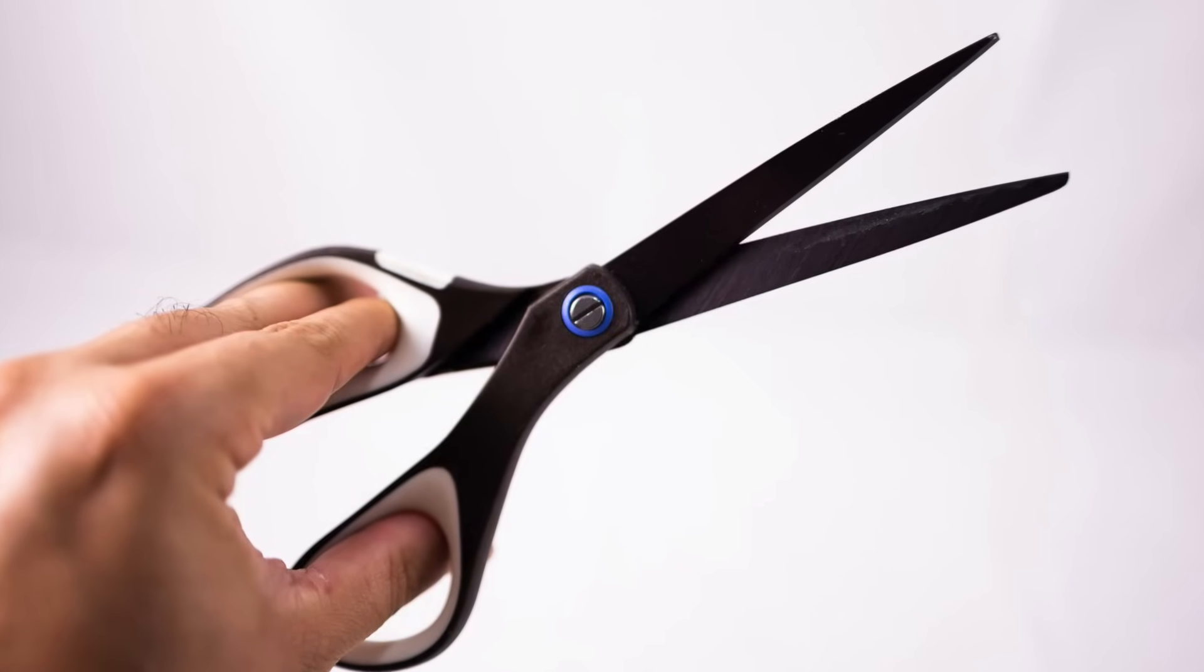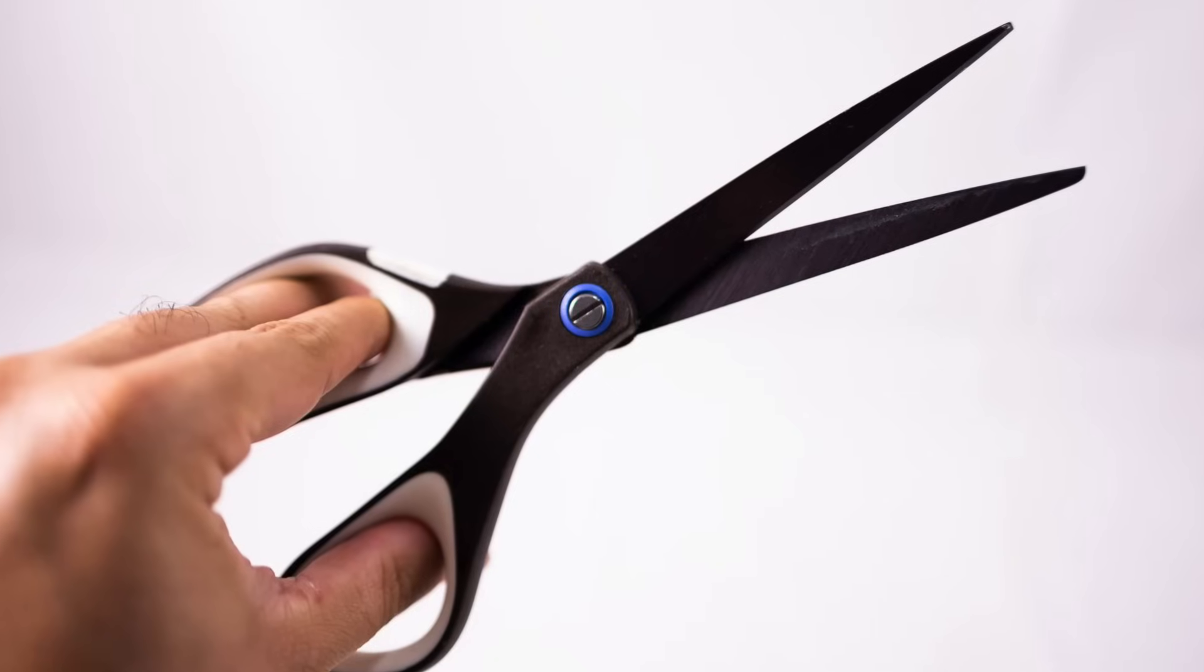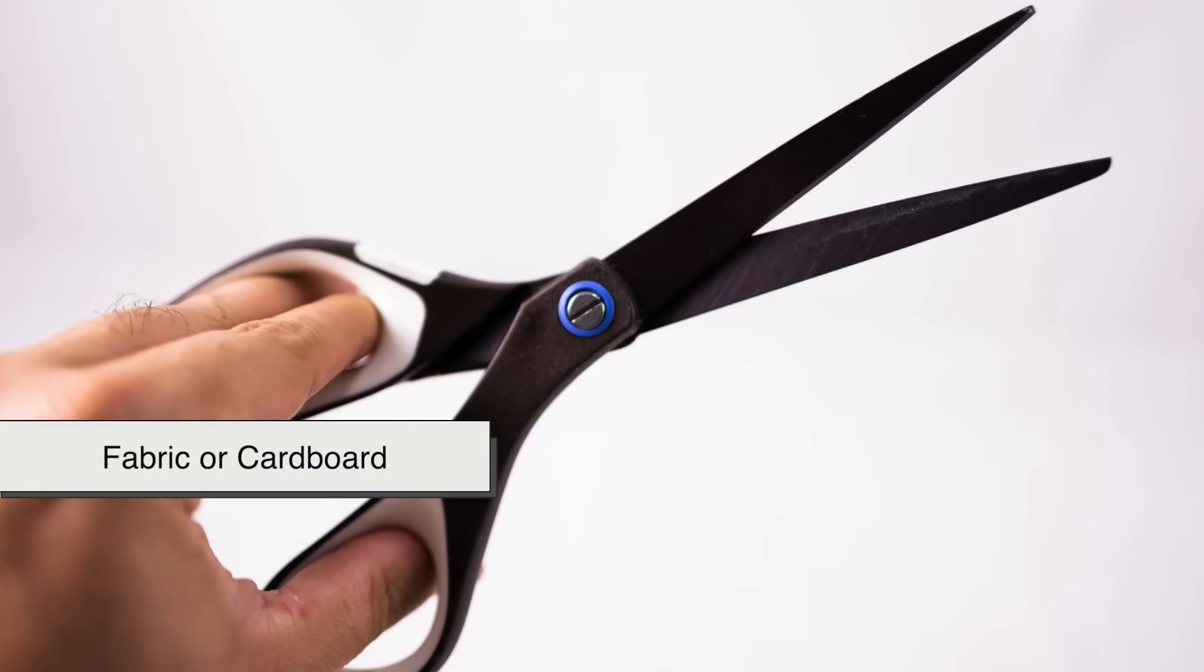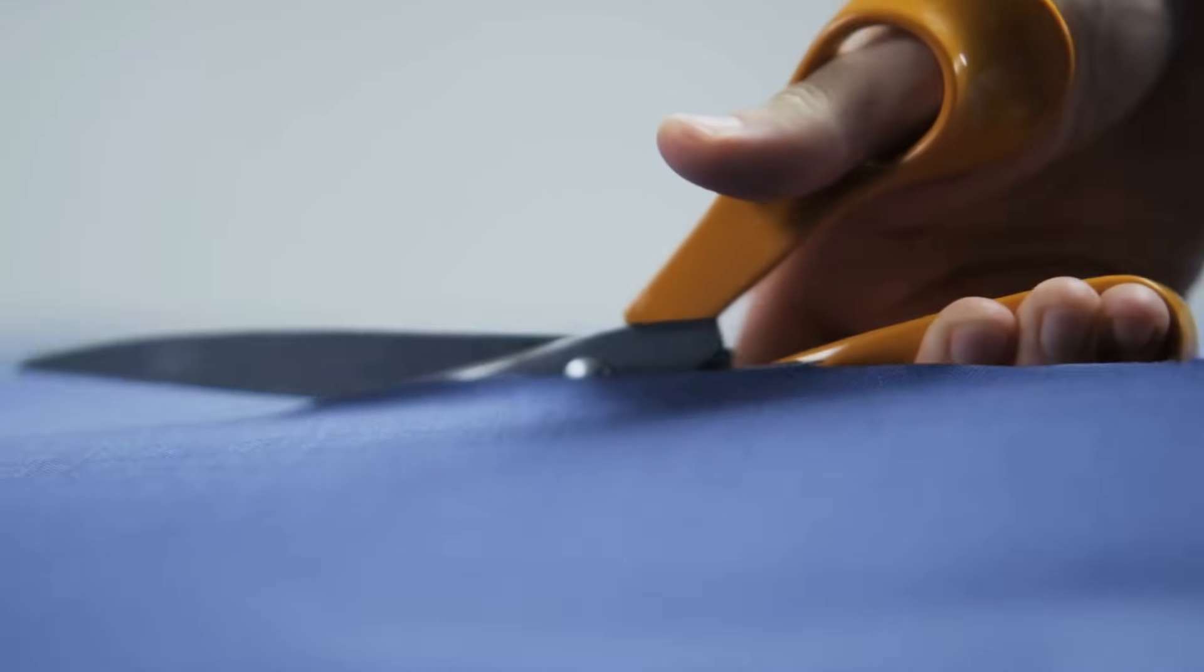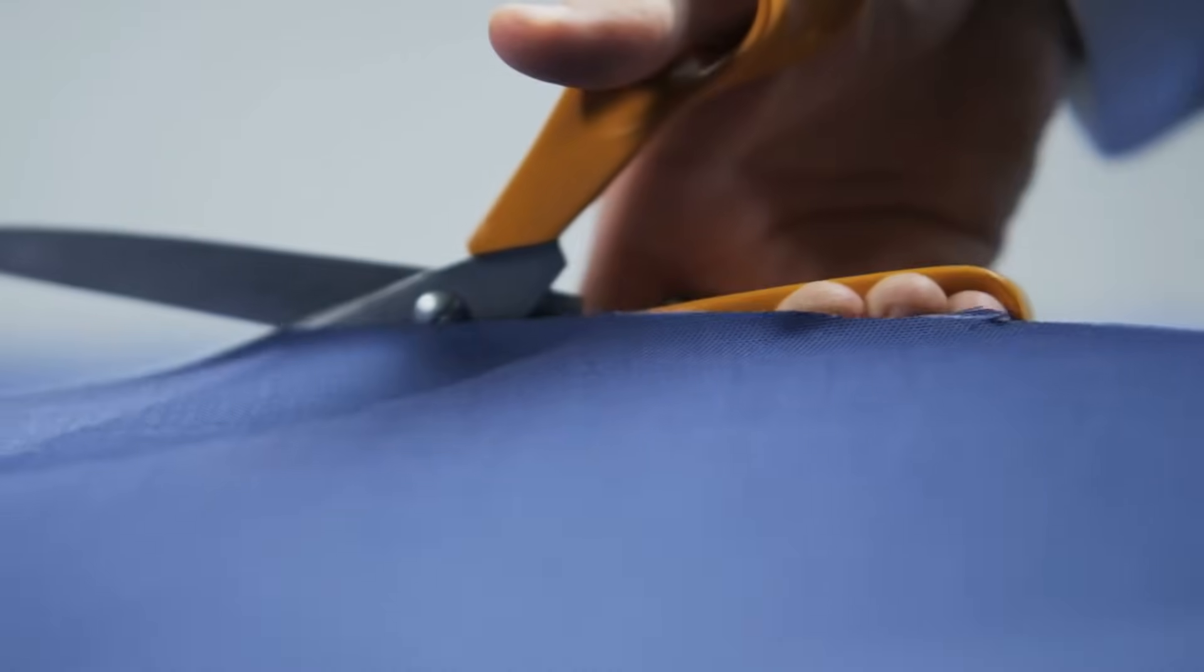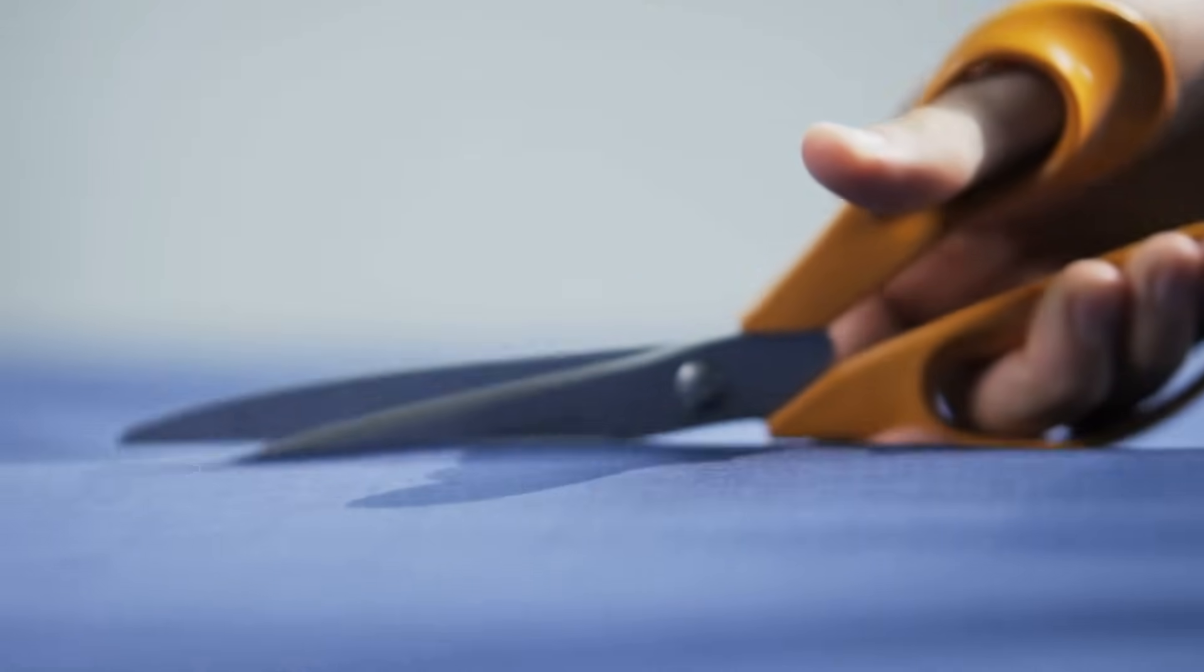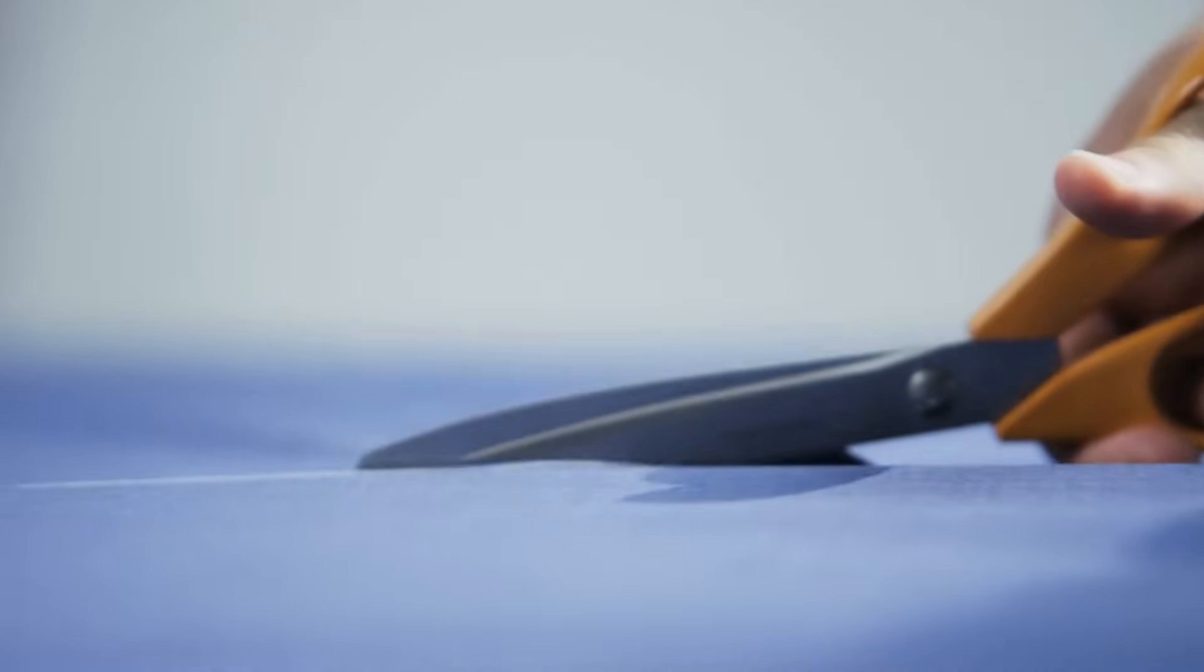The unequal handle sizes help balance this relationship. The larger loop allows multiple fingers to share the load, especially when you're cutting something tough like fabric or cardboard. Without that bigger space, the pressure would concentrate on just one finger, which would not only hurt over time, but also reduce the effectiveness of your cut.